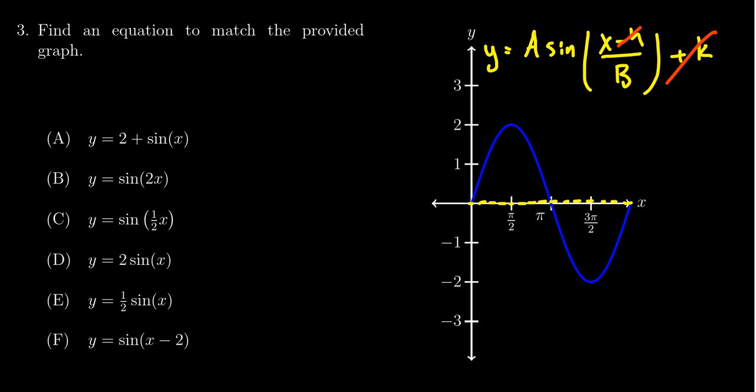The next thing to notice is that the amplitude is going to be how far above or below the midline does our sine wave go. It goes all the way up to 2, so we see that a is going to equal 2 right here.